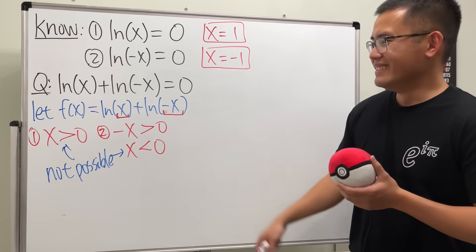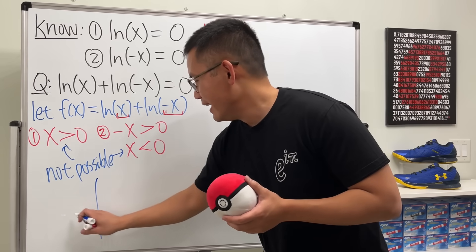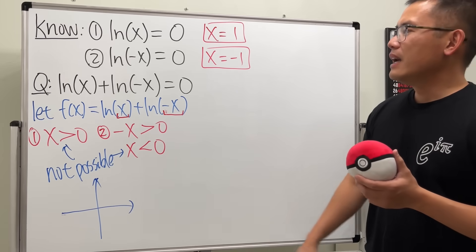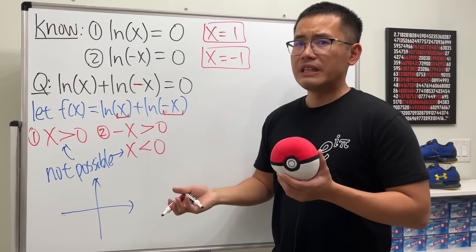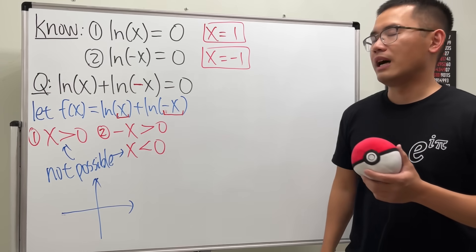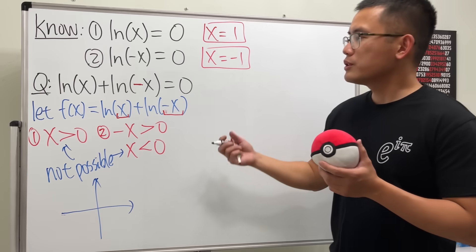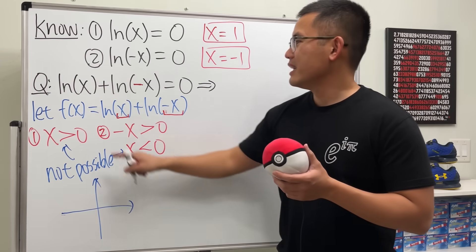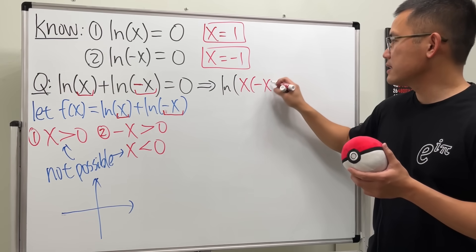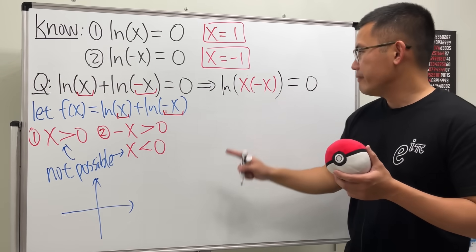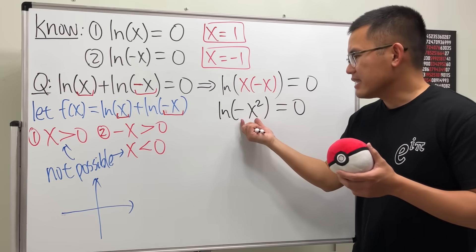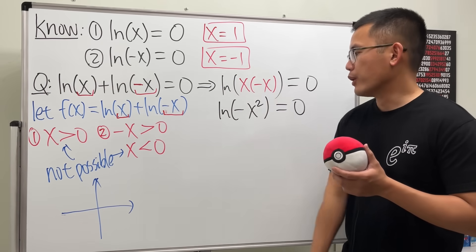It is impossible to find a number that is simultaneously greater than zero and less than zero, so this function has no domain at all — it's an empty graph, even worse than the previous example which had at least one point. However, for the complex solutions, let's combine the logarithms: ln(x) + ln(-x) = ln(x · (-x)) = ln(-x²) = 0. The inside -x² is always negative, confirming no real solutions.